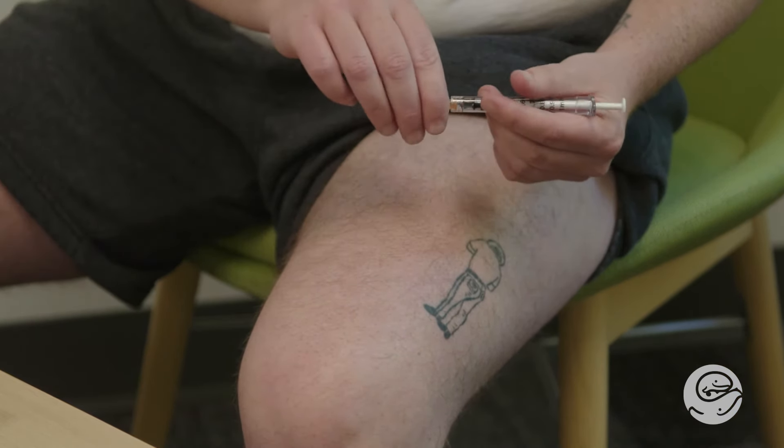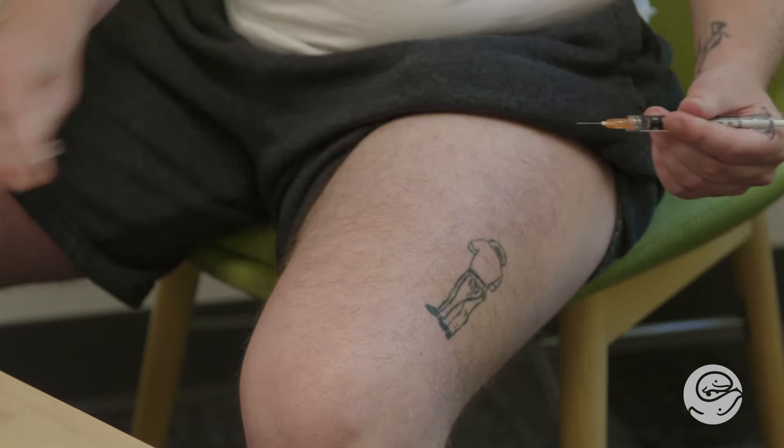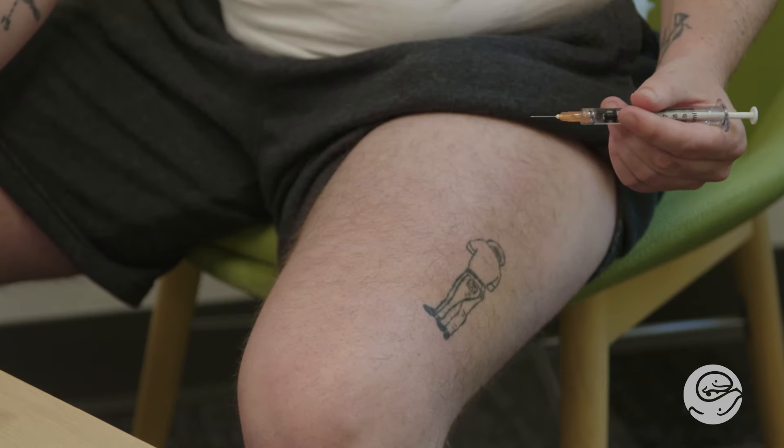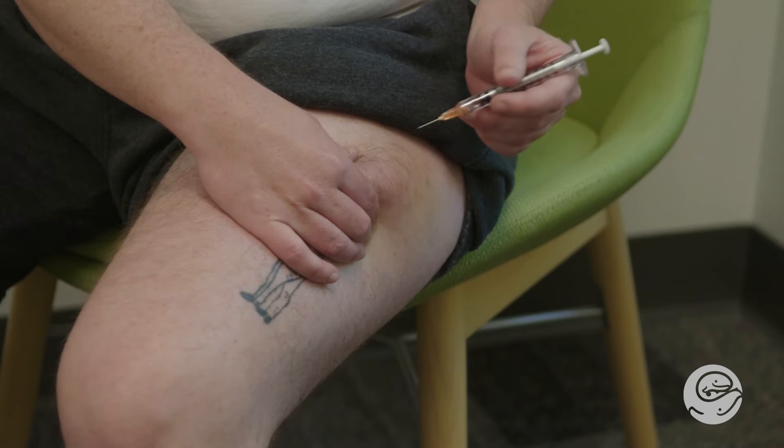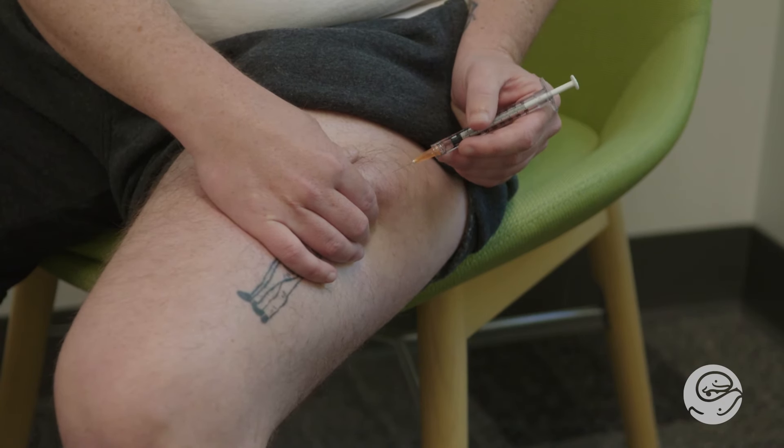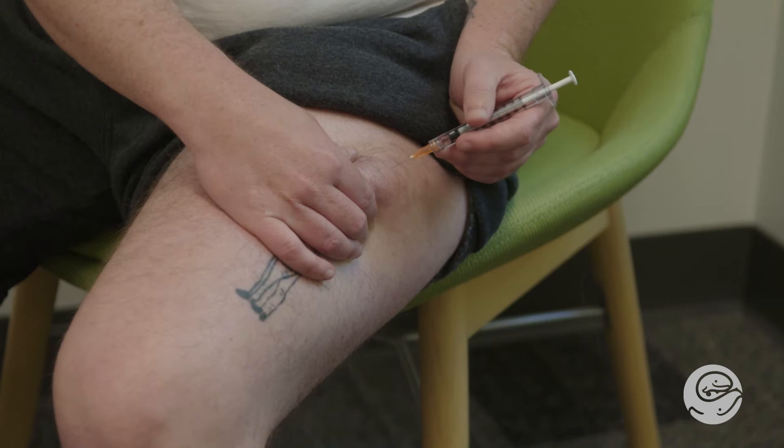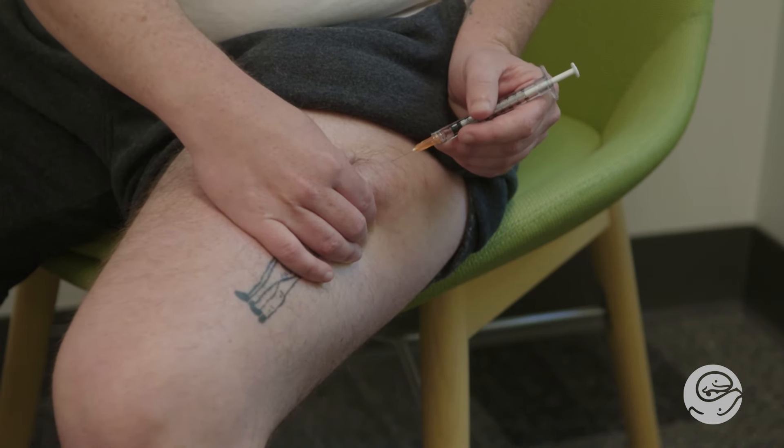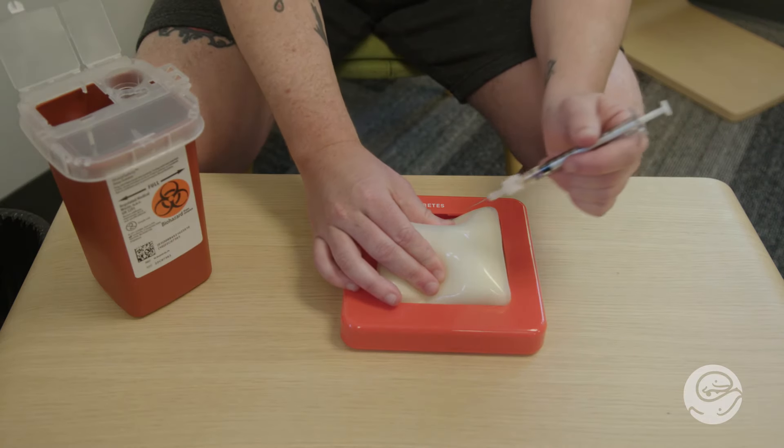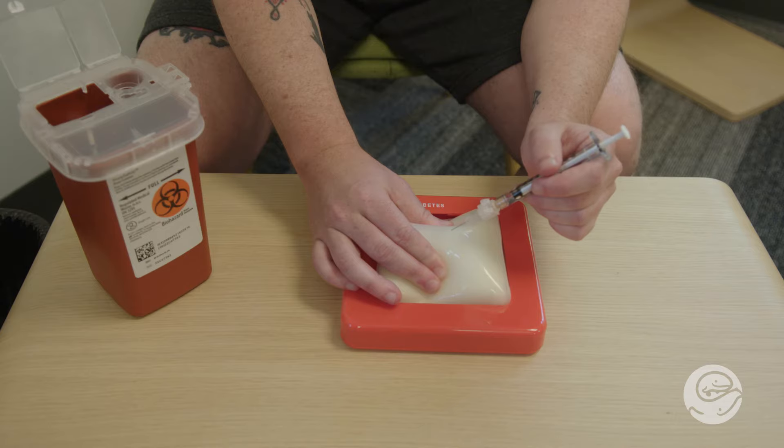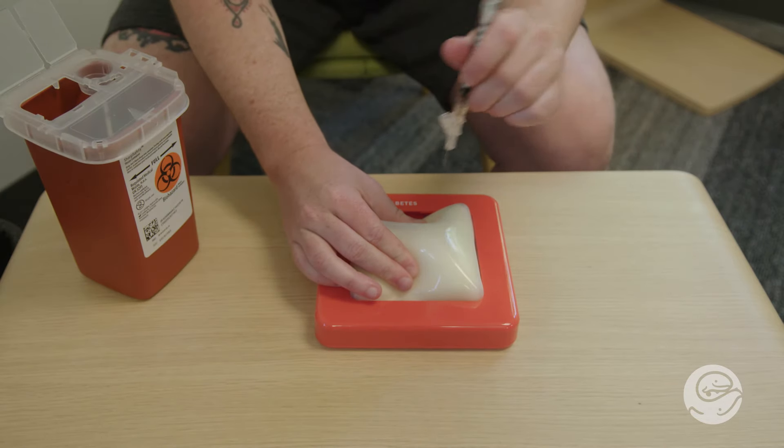Hold the syringe like a pencil. Keep your fingers away from the needle and make sure that you have an easy way to put your finger on the plunger once you insert the needle. Depending on the recommendations from your care team, you will either insert the needle into the injection site at a 45 degree or a 90 degree angle. This is a 45 degree angle. This is a 90 degree angle.